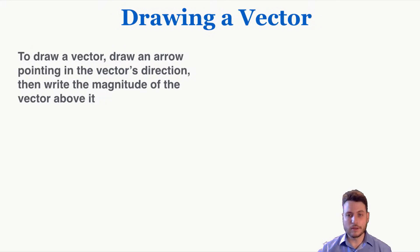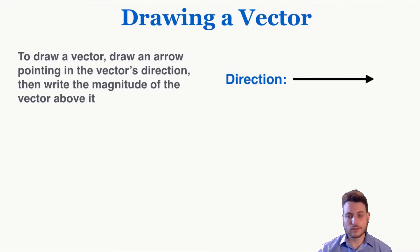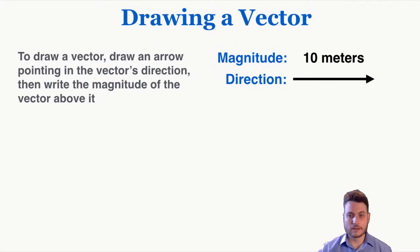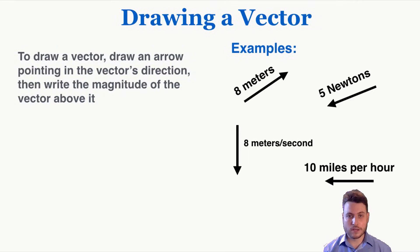As an example, if I want to draw a vector I need to give it a direction and a magnitude. I'm going to give that arrow a certain size and then label its magnitude above the arrow like this. So this vector literally means 10 meters to the right. These are a few more examples of vectors with specific labels.